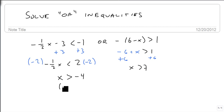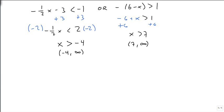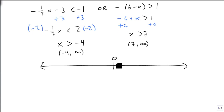So our interval notation is: negative 4 to infinity, and 7 to infinity. When we go and graph our solution, we come back to negative 4 and graph towards the infinity sign.